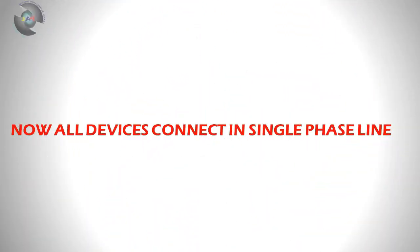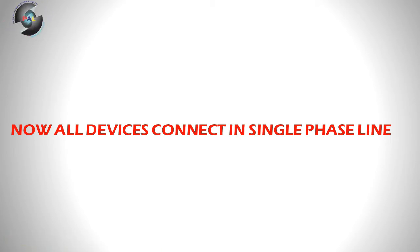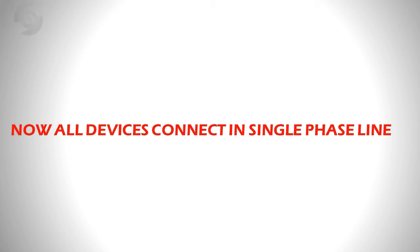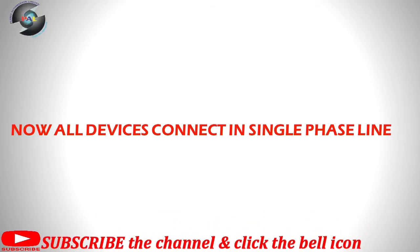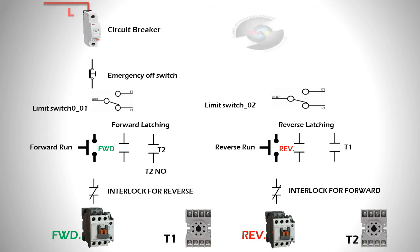Now all devices are connected in single phase line. This is very important when you connect all your devices in a single phase connection or single phase line — it's like a controlling system and the connection must be neat. So friends, don't skip the video, just watch to the end and you'll get some knowledge from this. Every device is here and now we are connecting every single device — line and neutral connected to every device.